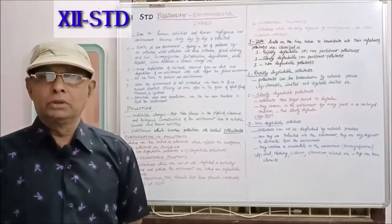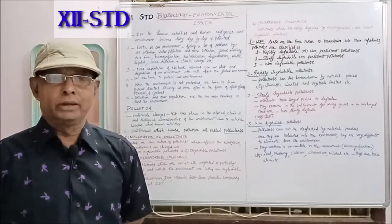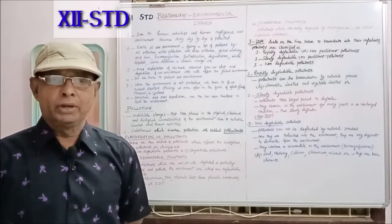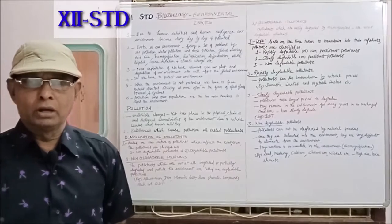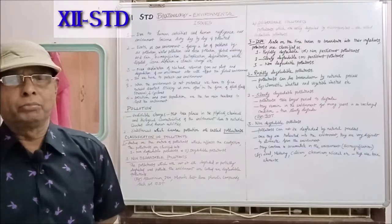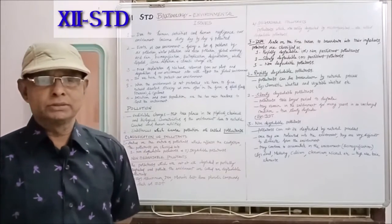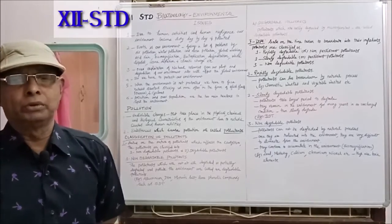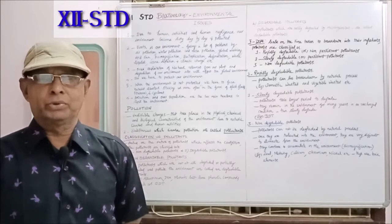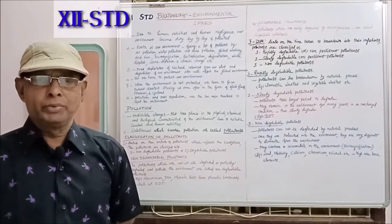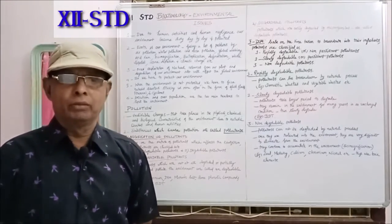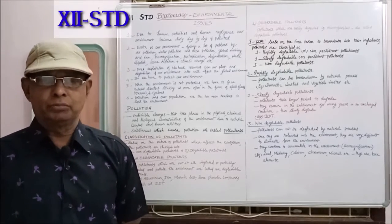The second type of classification is based on the time taken to break down into their components. Pollutants are classified as: number one, rapidly degradable pollutants or non-persistent pollutants; number two, slowly degradable pollutants or persistent pollutants; and number three, non-degradable pollutants. Rapidly degradable or non-persistent pollutants are those that can be broken down quickly by natural processes. For example, domestic waste and vegetable waste.